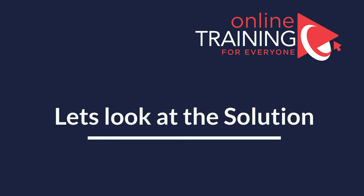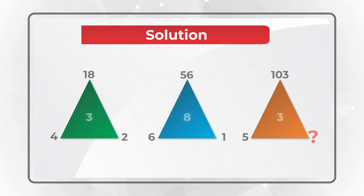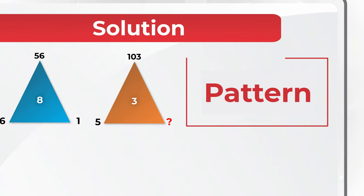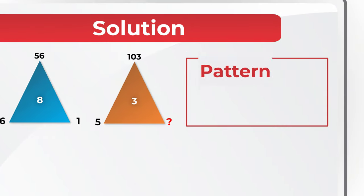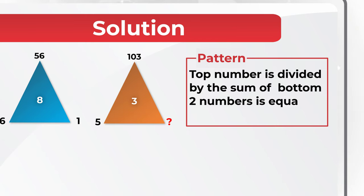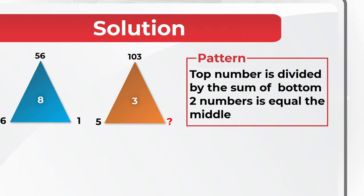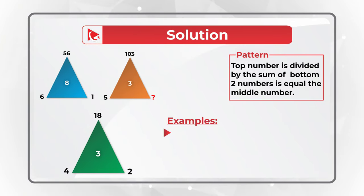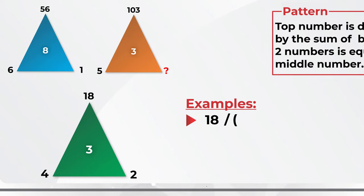Always look for patterns. The pattern here is that the top number divided by the sum of the bottom two outside numbers equals the middle number. Let's verify with the first example: 18 divided by (4 plus 2) equals 18 divided by 6, which equals 3.